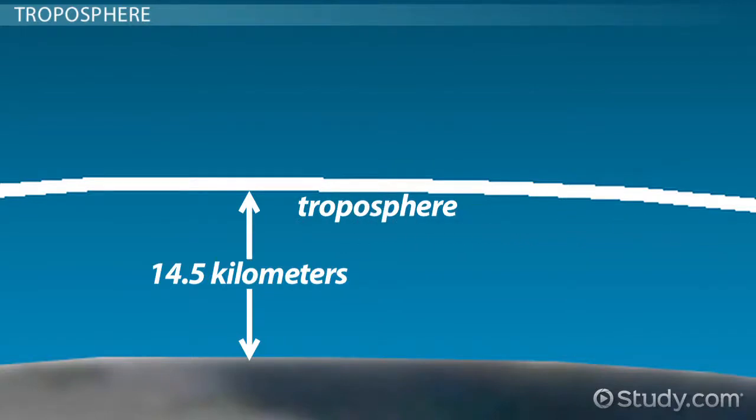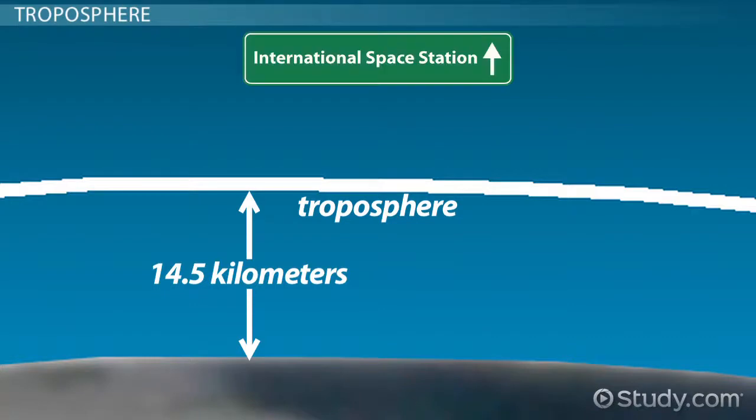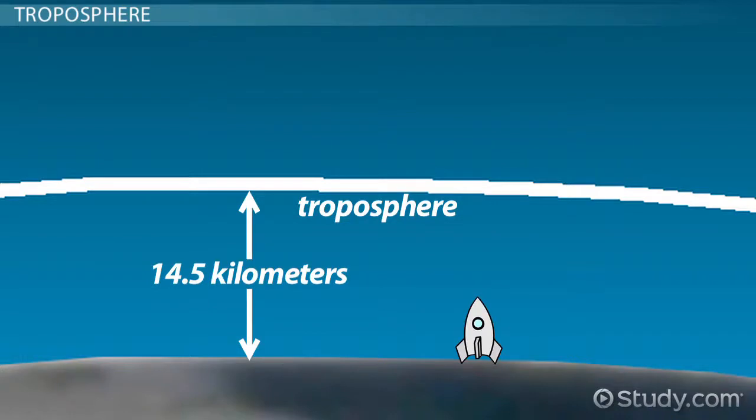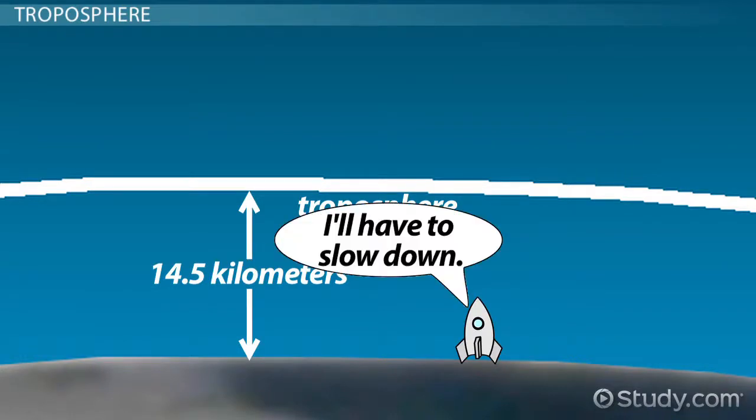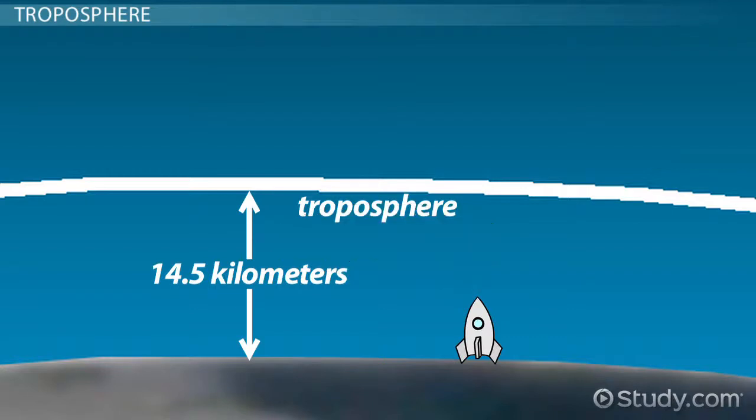At only 14.5 kilometers up, you're nowhere near close enough to be able to service the space station. However, considering that your rocket travels at 8 kilometers per second, which is a bit slow for a rocket to be honest, you'll be out of the troposphere in less than two seconds. In doing so, you'll be one of a small few to leave that layer of the atmosphere.